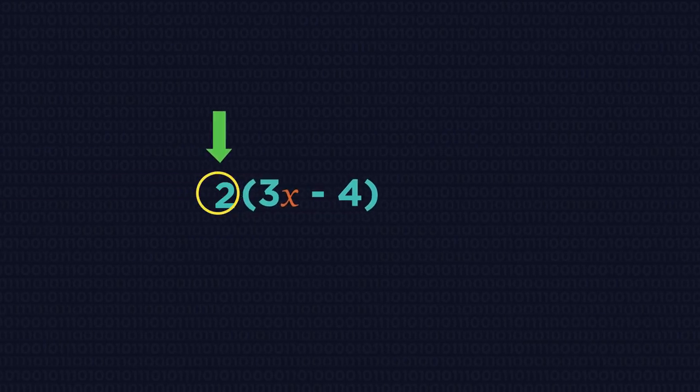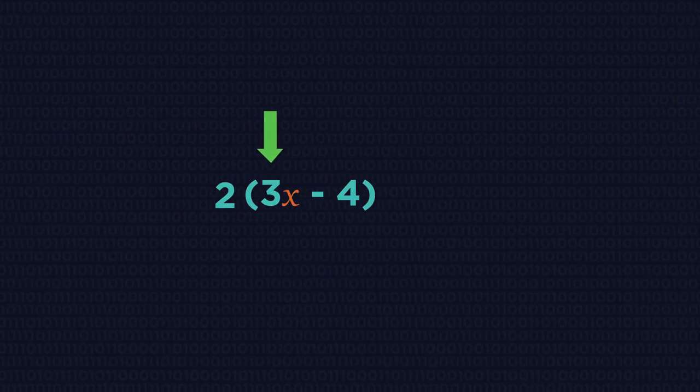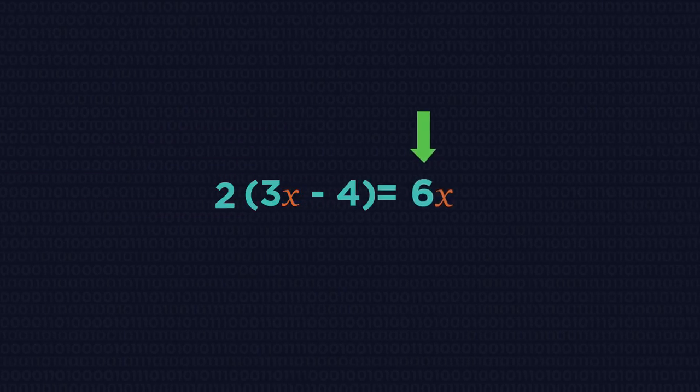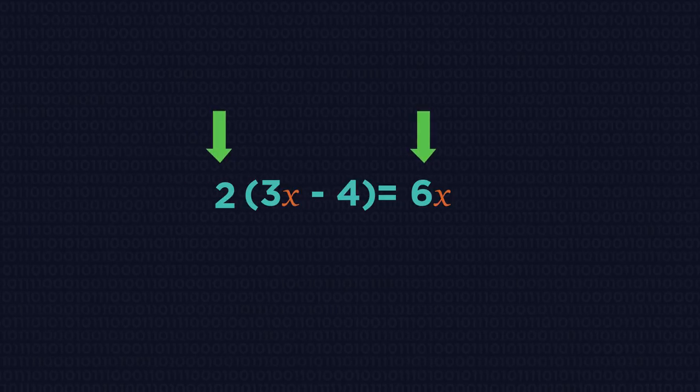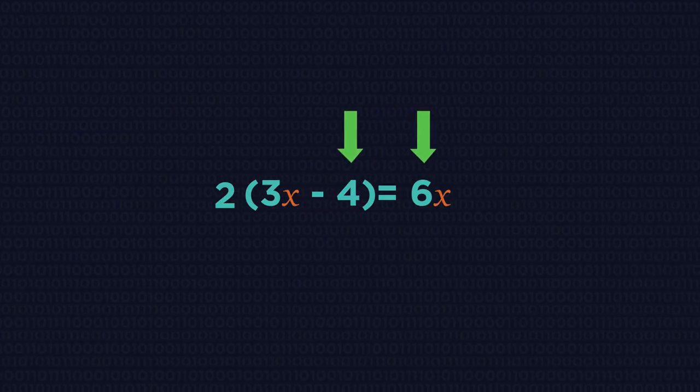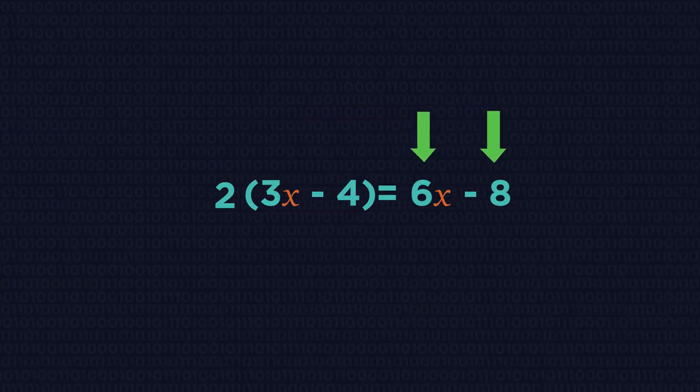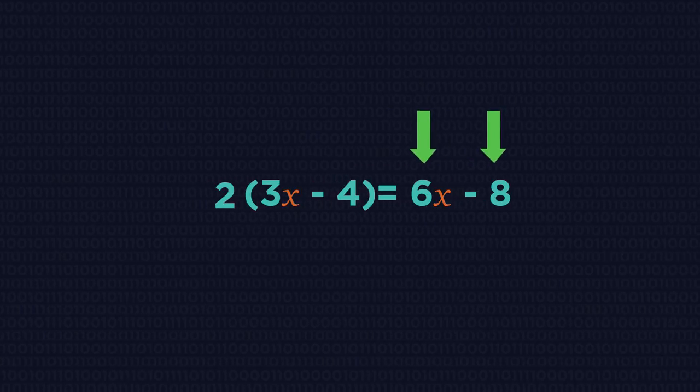So 2 multiplied by 3x gives us 6x, and 2 multiplied by negative 4 gives us negative 8. Make sure you include the sign.